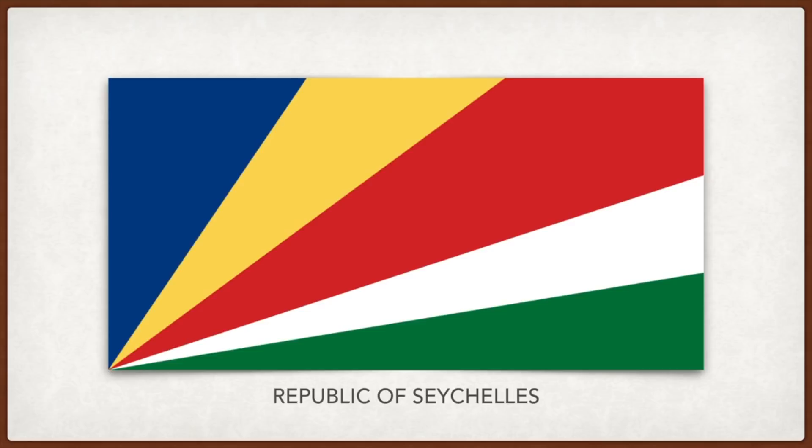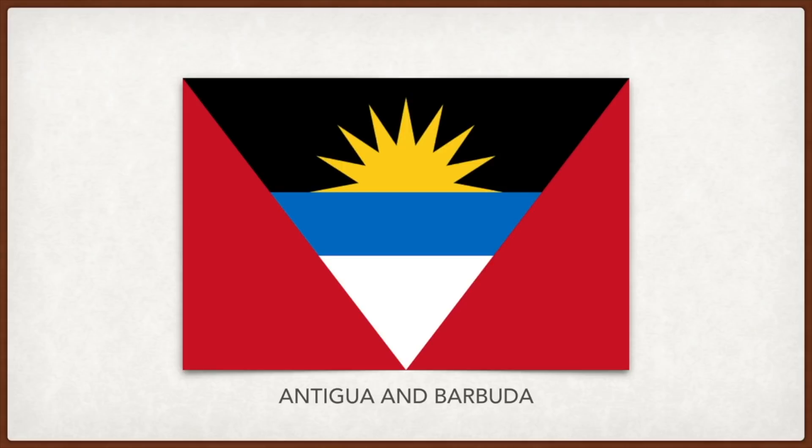Antigua and Barbuda: the black is for the African ancestry of the people, the sun is for the always sunny weather, the blue below is for the Caribbean Sea, the white represents sand, the V-shape is a symbol of victory, and the red is for the dynamism of the people working towards their own future.